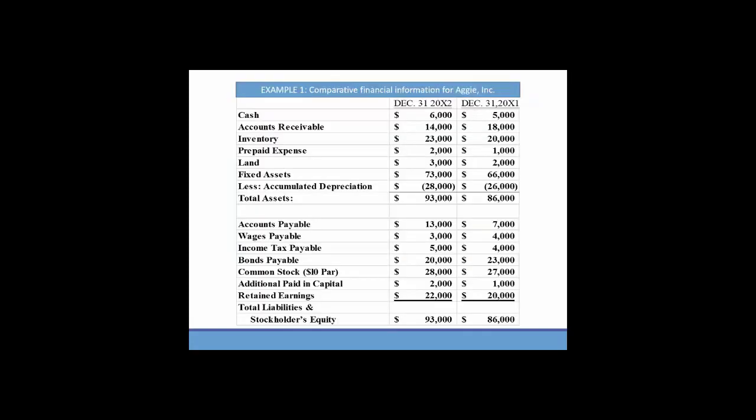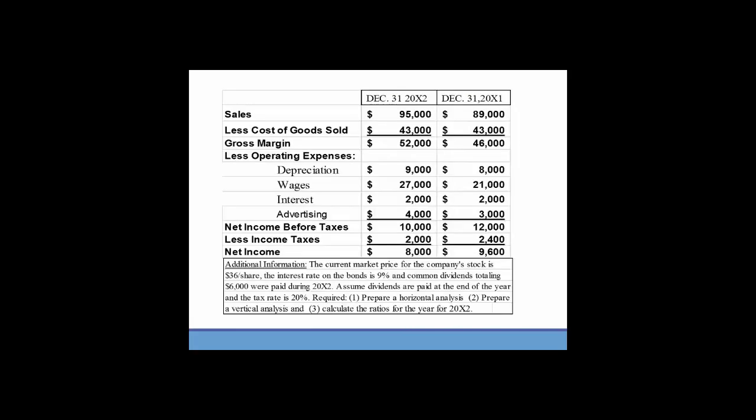Now to look at those financial statements, you'll see that you're given a comparative balance sheet with assets, liabilities, and equities for 20x1 and 20x2, 20x1 being the earliest year. You also see comparative income statements for 20x1 and 20x2, and then some additional information that we will look at as we need that information.